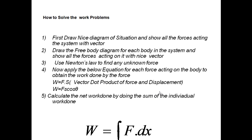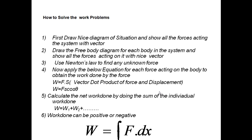Calculate the net work done by summing the individual works: W = W1 + W2 + ... Work done is a scalar quantity, so it can be easily summed. It is positive when force and displacement are in the same direction, and negative when the force acts against displacement.